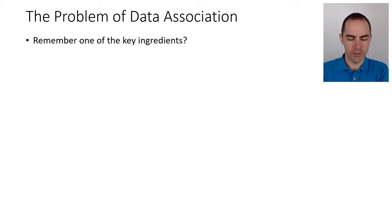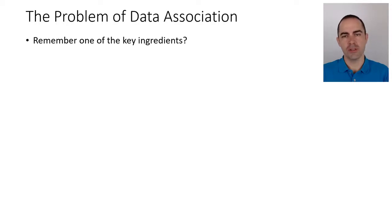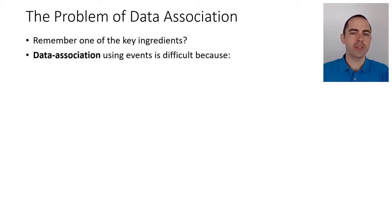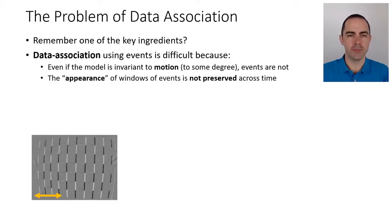This is an important one — actually one of the key ingredients mentioned in a couple of videos back at the beginning of tracking. It's about saying which events belong to which edges. Data association using events is a difficult problem for multiple reasons.